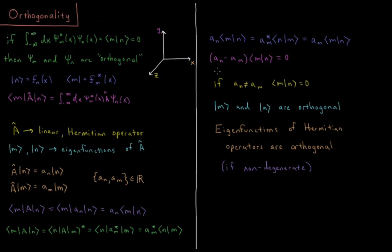So in order for this whole expression to be zero, this quantity has to be equal to zero. So this means that ψ_m and ψ_n are orthogonal, because this is our definition of orthogonality for two functions. The integral of their product overall space is equal to zero.